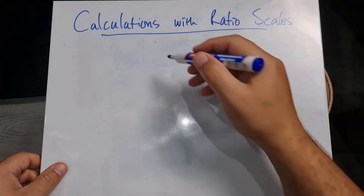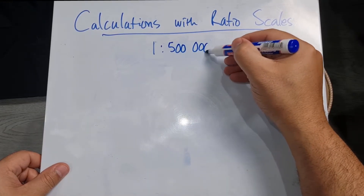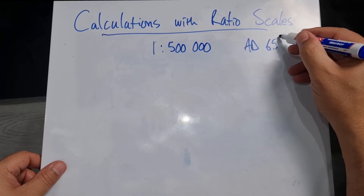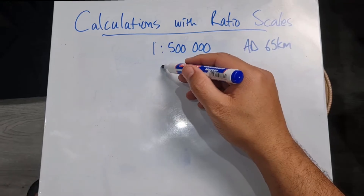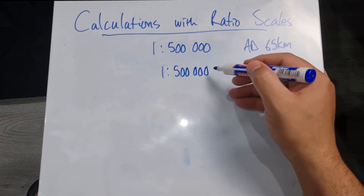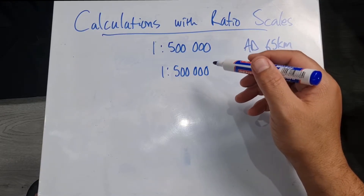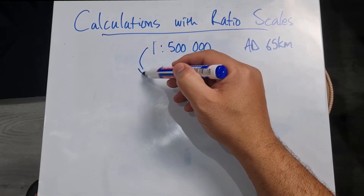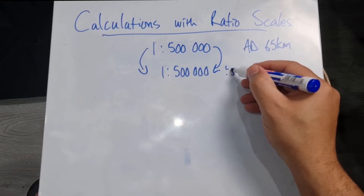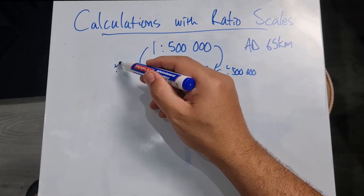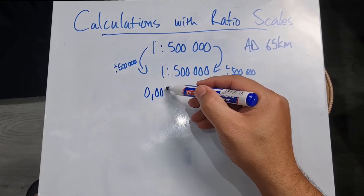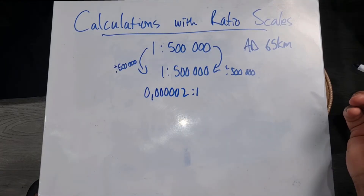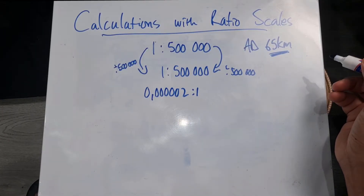Now let's look at a slightly different example where we've got a ratio of one is to 500,000 and we've got the actual distance of 65 kilometers, and they want us to work it back to what that distance would be on the map. So we've got our ratio one is to 500,000, and the first thing I'm going to do is divide by 500,000 — that's going to give me one on the left and 0.000002 on the right.